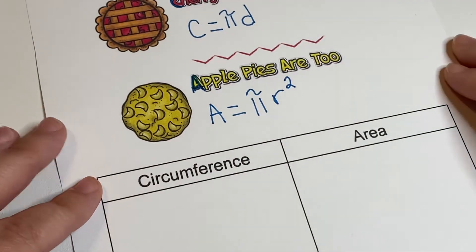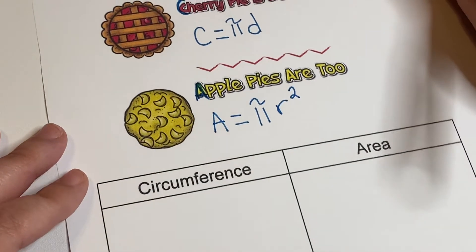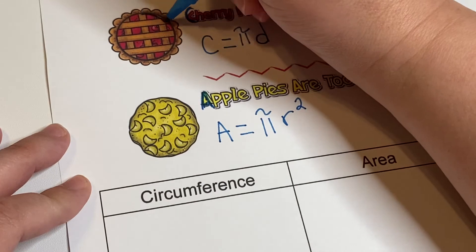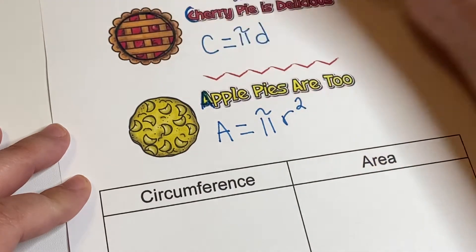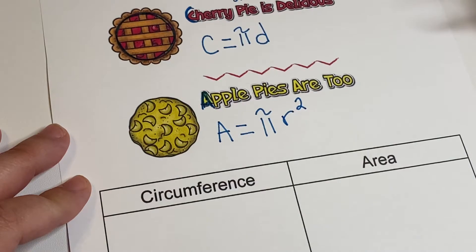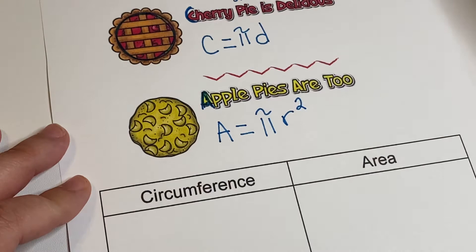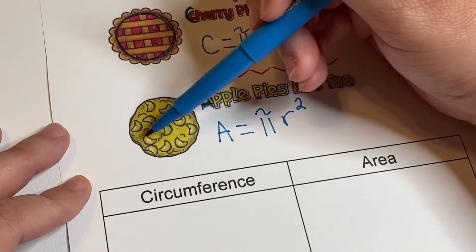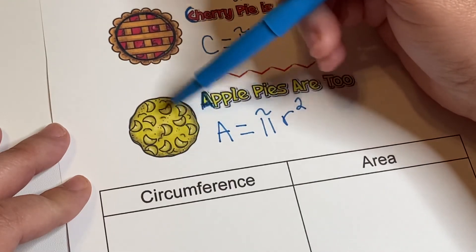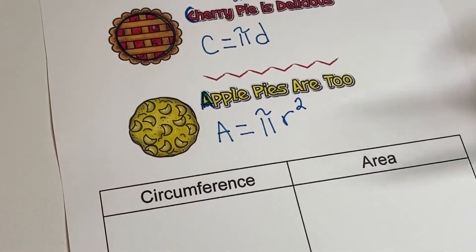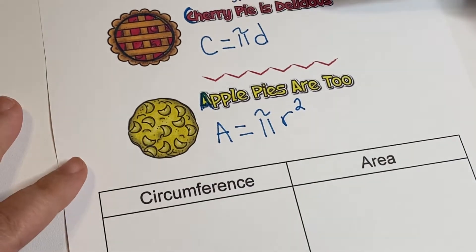Now another thing to keep in mind is that circumference is this distance around the outside of a circle, and that is one-dimensional, so there's no squaring. The area would be like all of this pie filling surface - that would be the area. So that is measured in squares because it's two-dimensional.